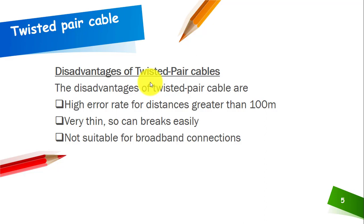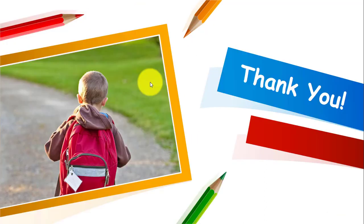The disadvantages of twisted pair cable are: it has a high error rate — if the distance between the sending and receiving devices is around 100 meters, there is a greater chance of errors; it is very thin and can easily break; and it is not suitable for broadband connections.